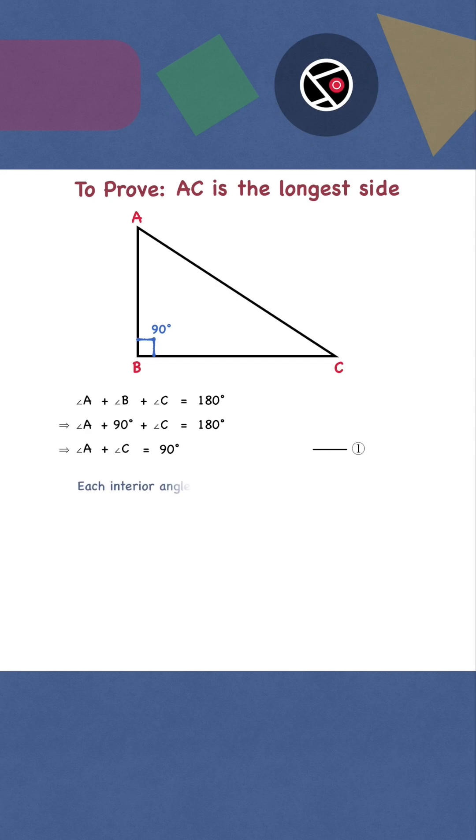Each interior angle of a triangle has a positive value. The magnitude is greater than 0. Both angle A and angle C are greater than 0.